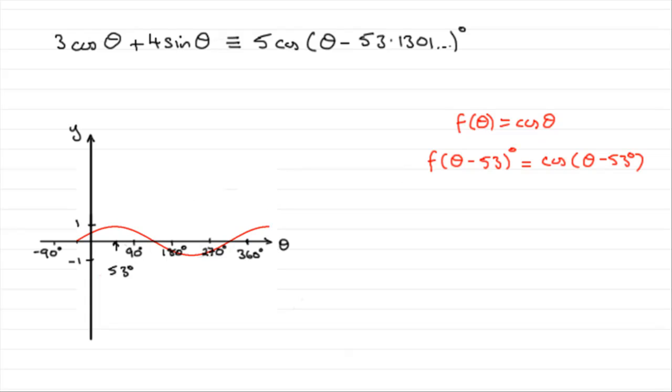Now what we're going to do is multiply this by 5. If we do 5 times f(θ - 53°), then we're going to get 5 cos(θ - 53°). And you'll notice that's what we've got here.